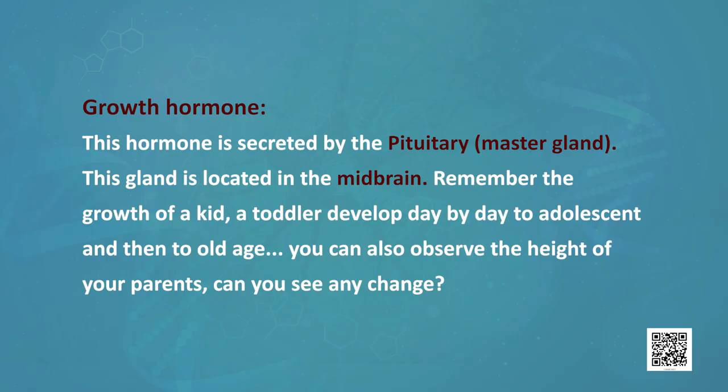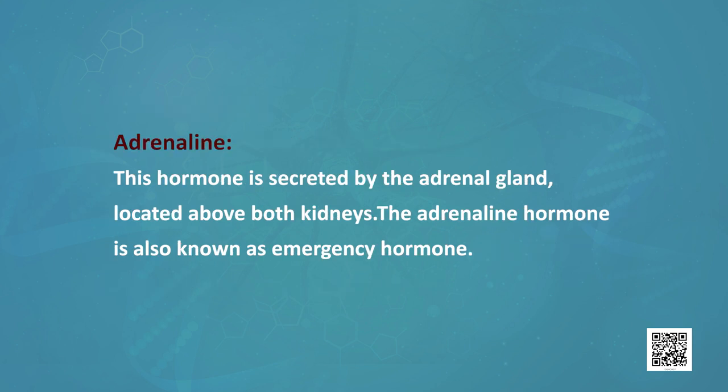Next is the growth hormone, secreted by the pituitary gland. This gland is also known as the master gland because it controls the activity of many endocrine glands. It is located in the mid-brain and is responsible for growth and development. Adrenaline hormone is secreted by the adrenal gland, which is located just above the kidneys. This hormone regulates blood pressure, heartbeat, and carbohydrate metabolism.